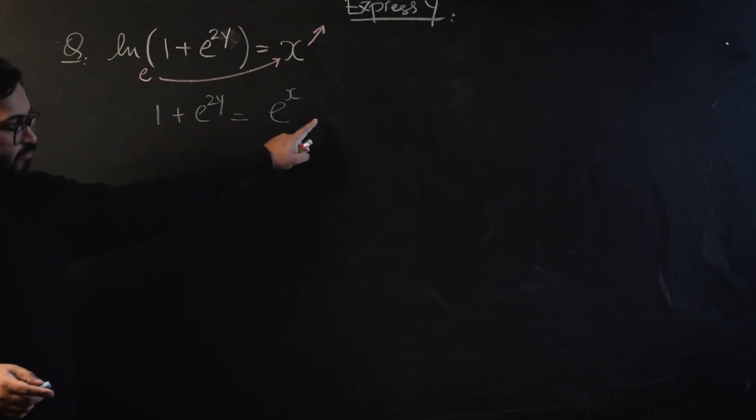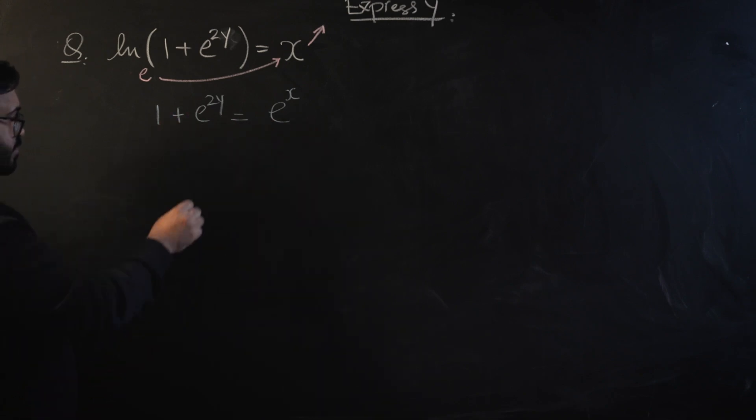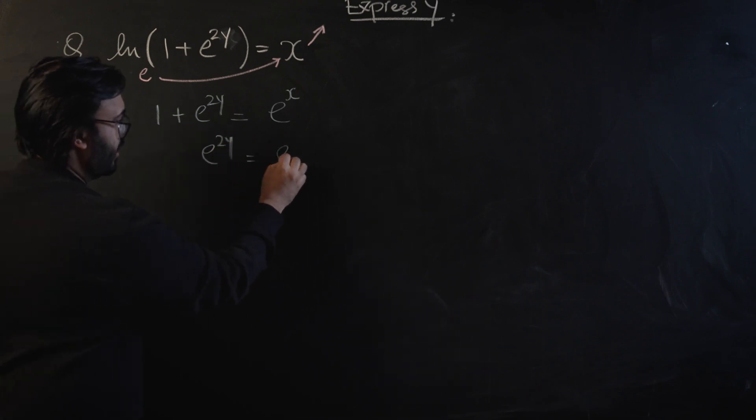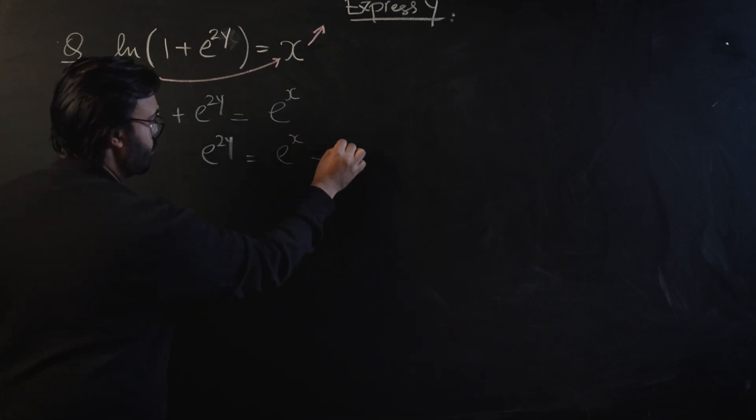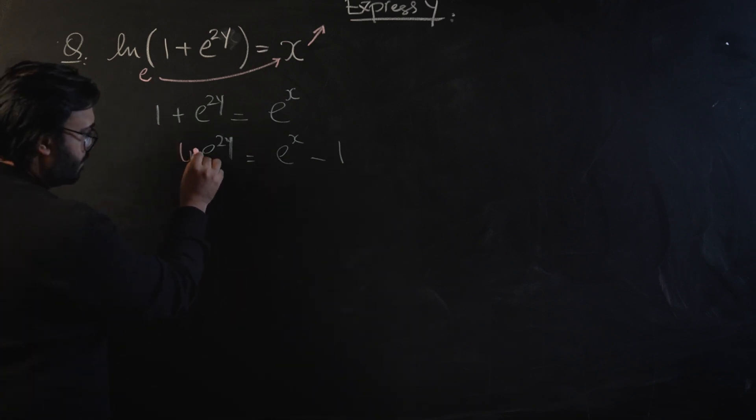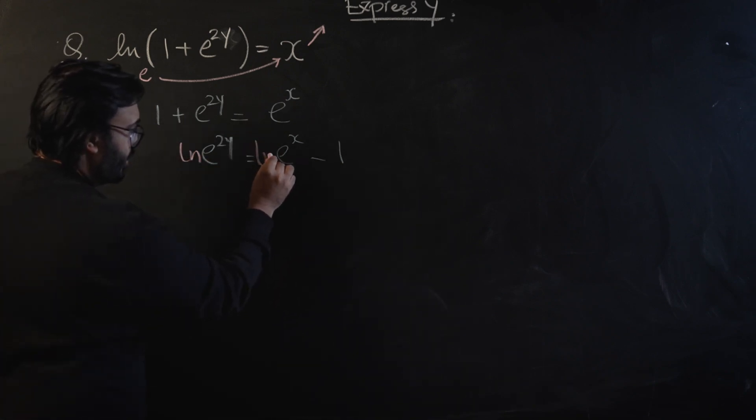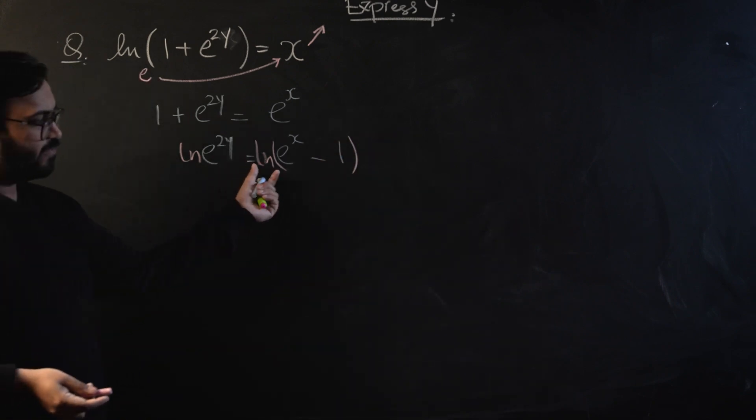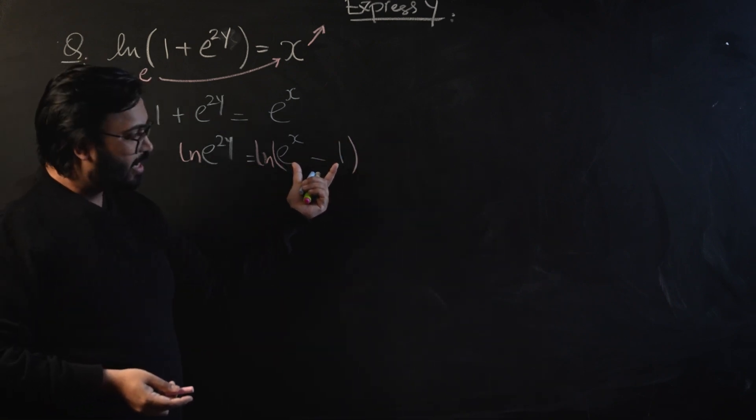So we are left when 1 plus e raised to the power 2y will give us e raised to the power x. Now if we want to make y subject, we're going to move 1 to the right hand side of the equation. So e raised to power 2y would become e raised to power x minus 1.